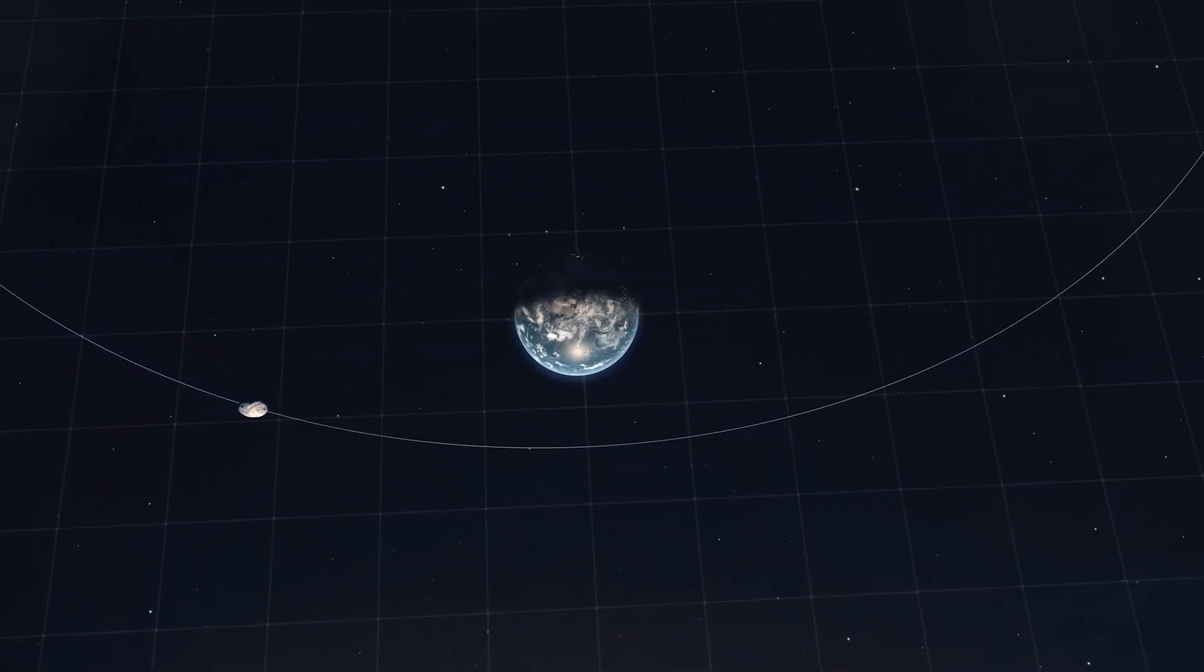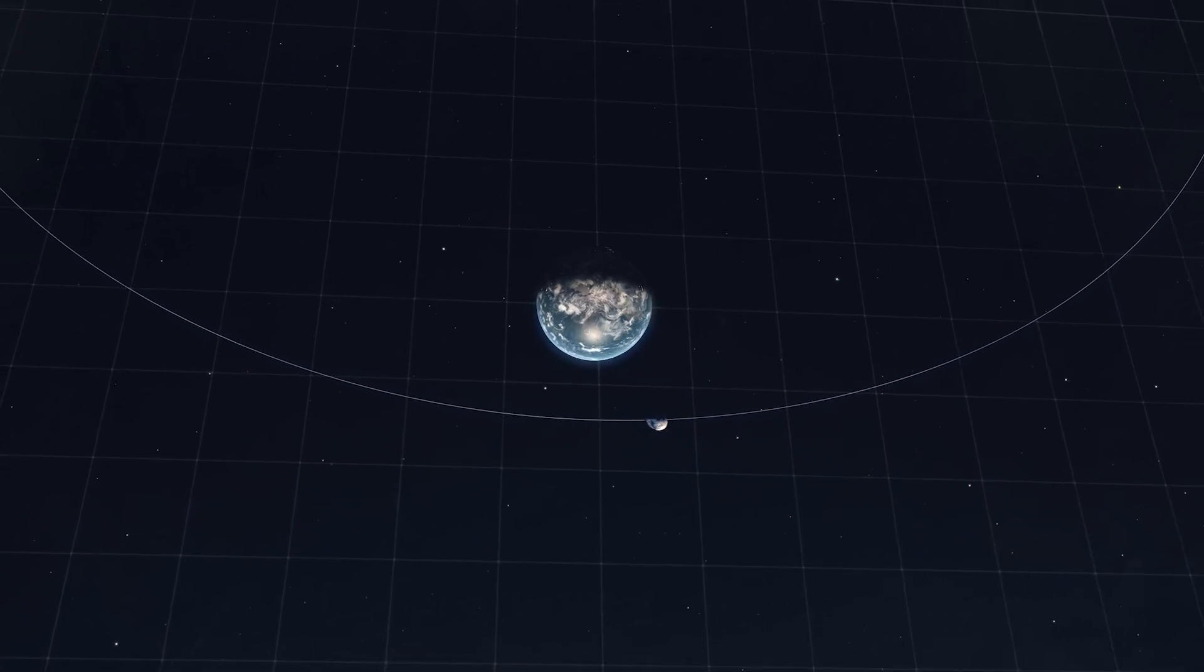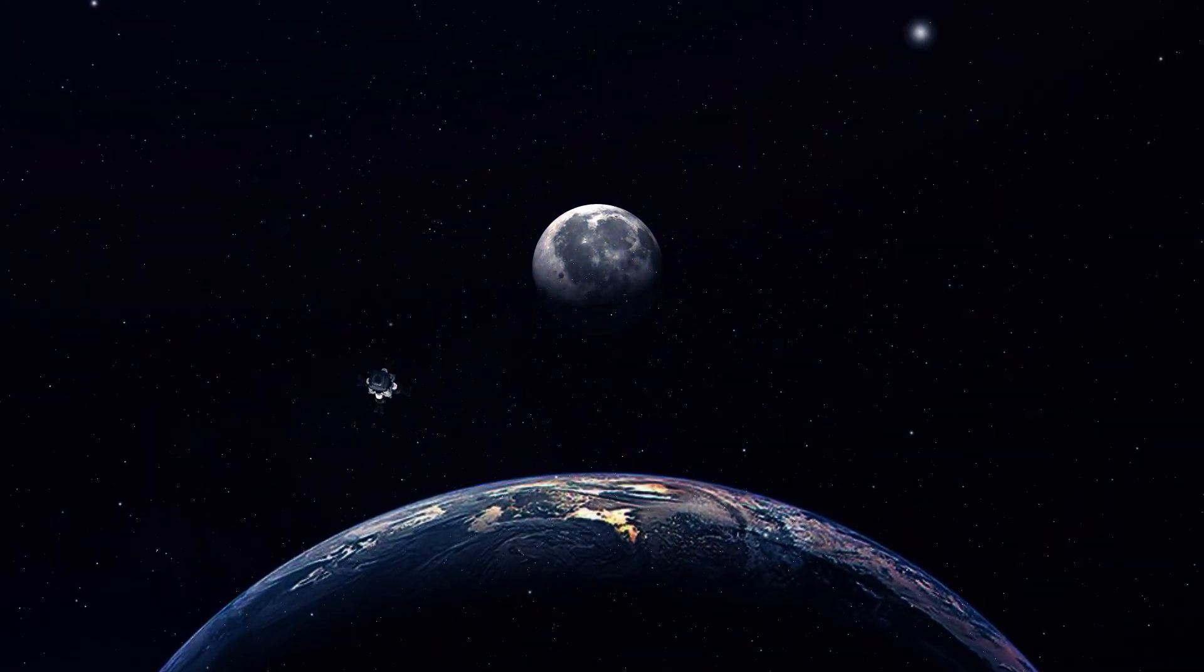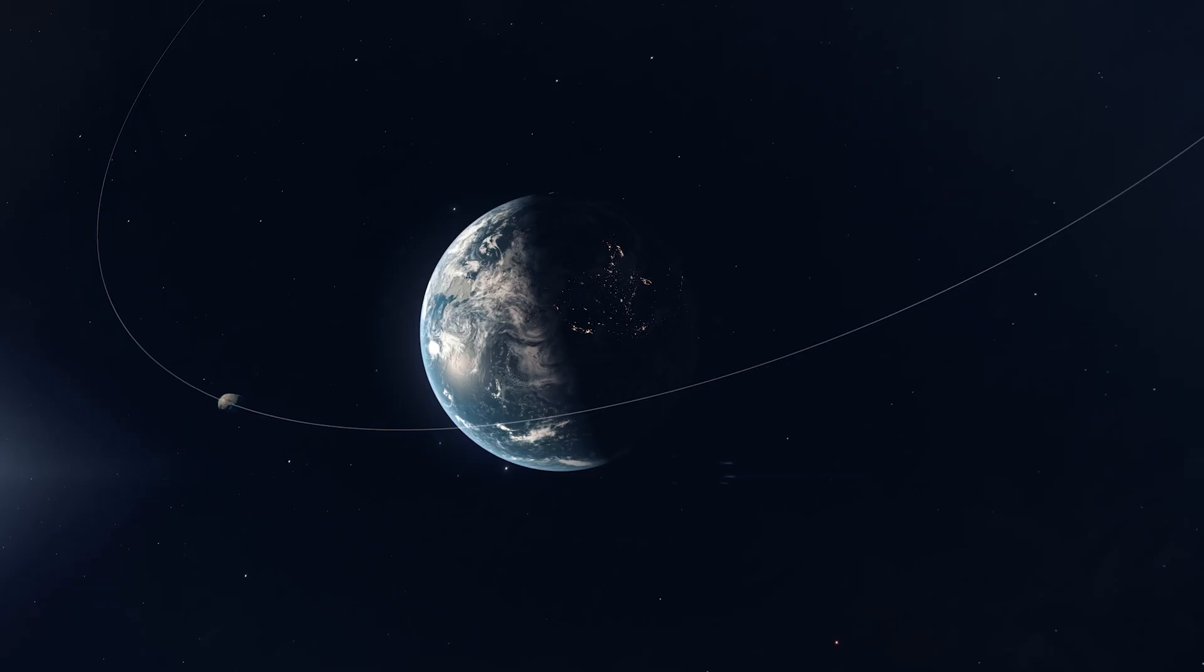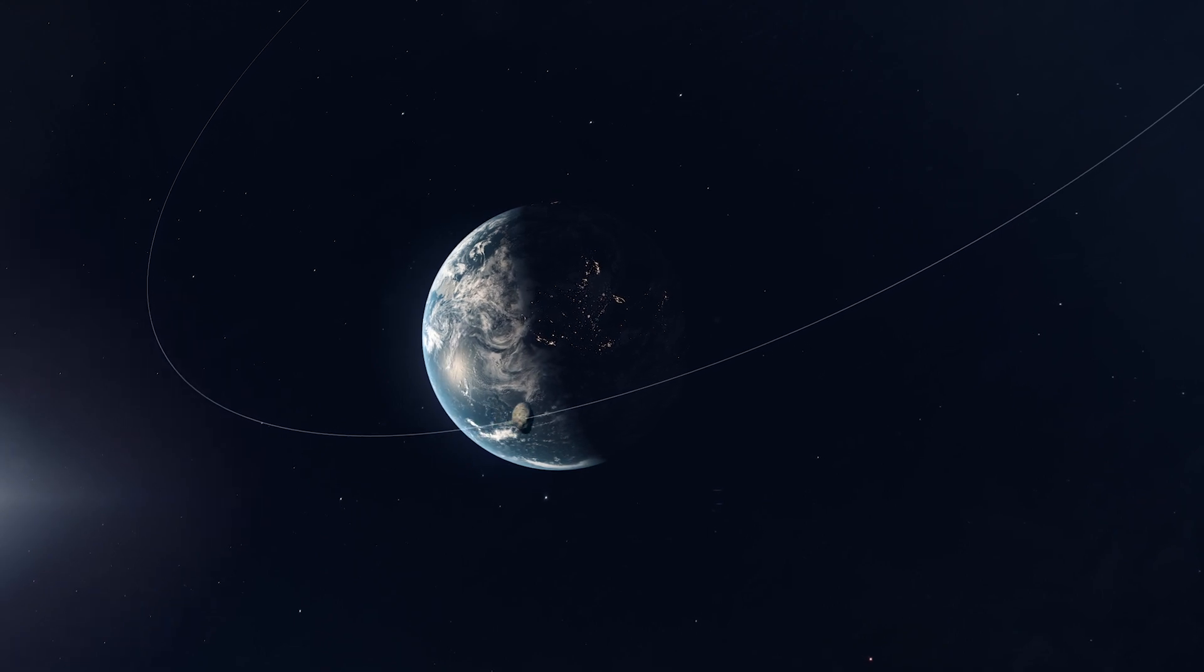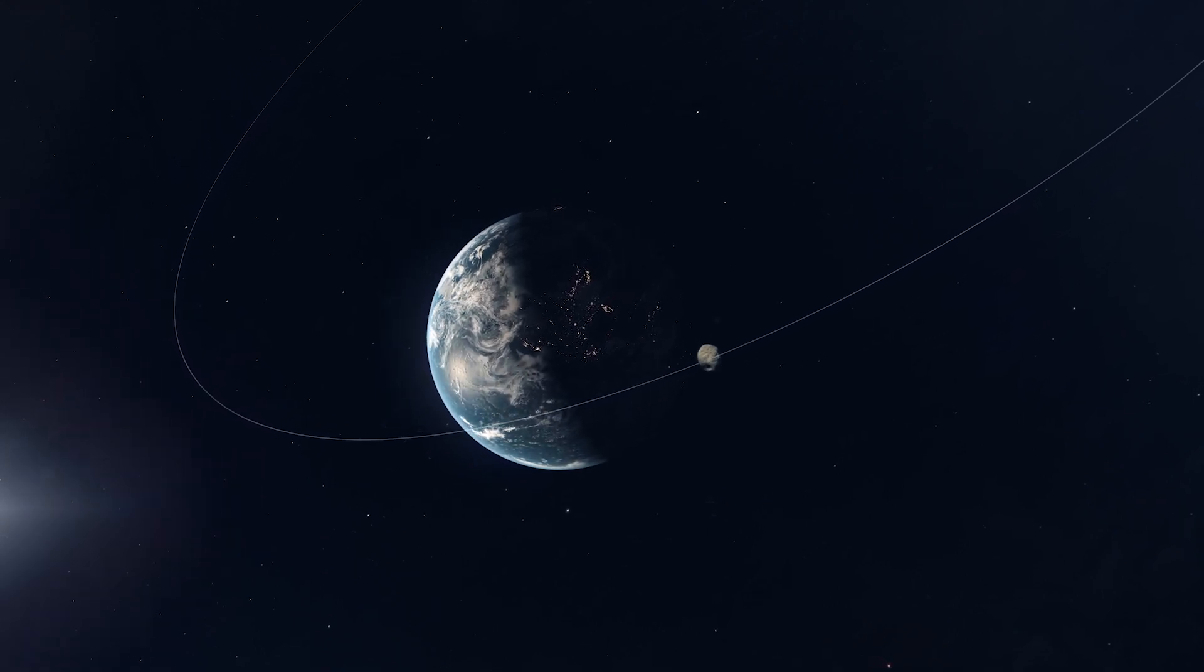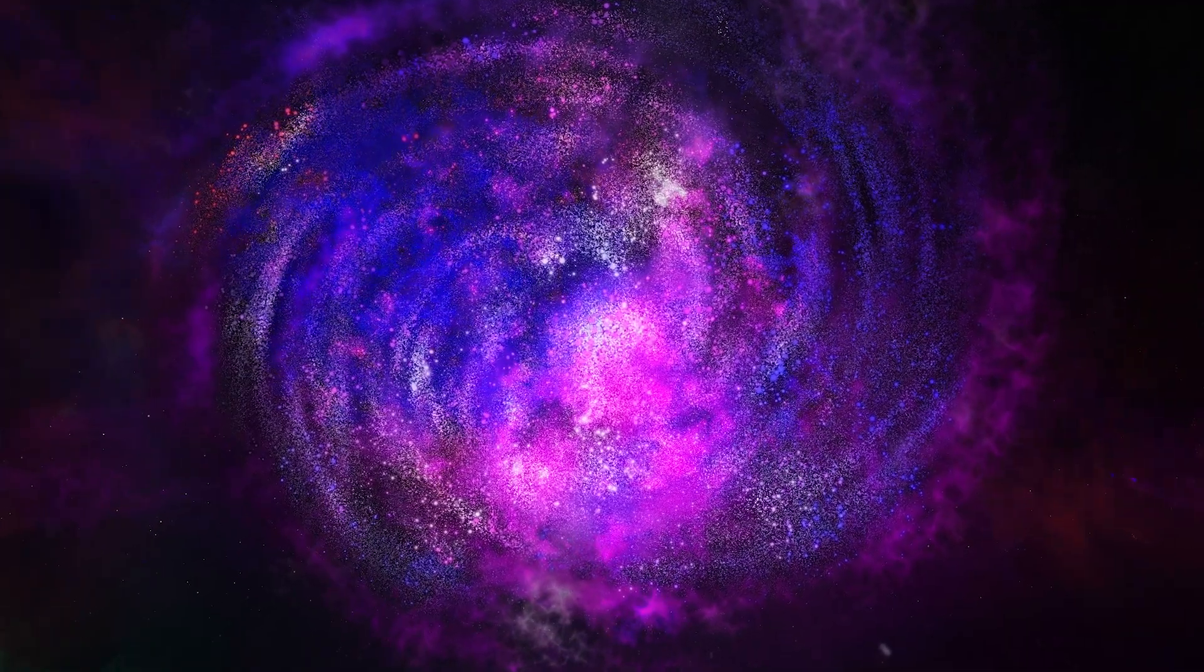In the simplest terms, a mini-moon is a small asteroid that's been temporarily captured by Earth's gravity. These cosmic visitors aren't permanent fixtures like our good old moon. Instead, they're more like celestial tourists, dropping by for a quick orbit or two before heading back out into the vast expanse of space.